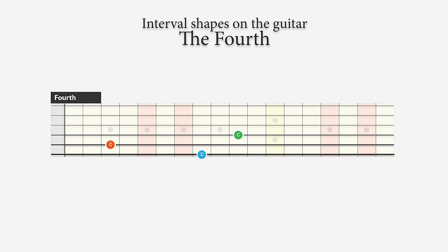The fourth is also a pretty common interval. On the sixth, fifth, fourth, and second string, the notes of the interval are positioned below each other in the same position on two adjacent strings — very easy to remember and play. There's an exception on the third string where you find the fourth one fret up and one string down. The augmented fourth is created when you raise the highest note by a half step or one fret.